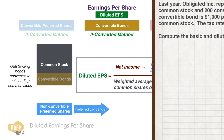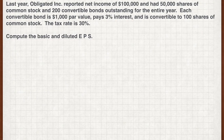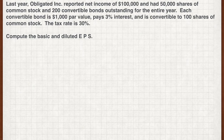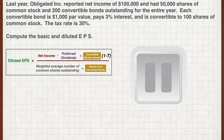Let's apply this in an example. Last year, Obligated Incorporated reported a net income of $100,000 and had 50,000 shares of common stock and 200 convertible bonds outstanding for the entire year. Each convertible bond is $1,000 par value, pays 3% interest, and is convertible to 100 shares of common stock. The tax rate is 30%. Compute the basic and diluted EPS.